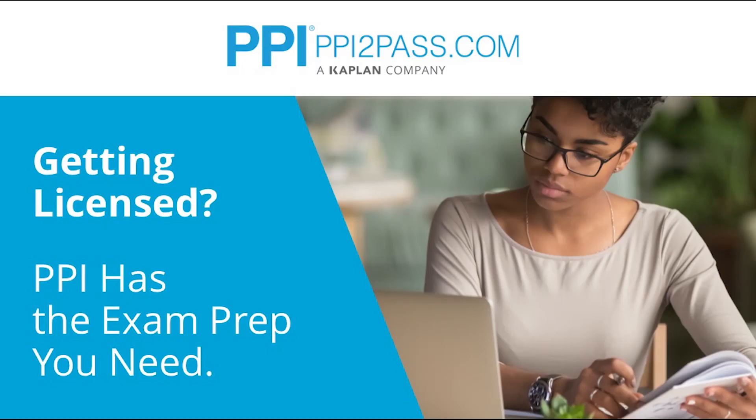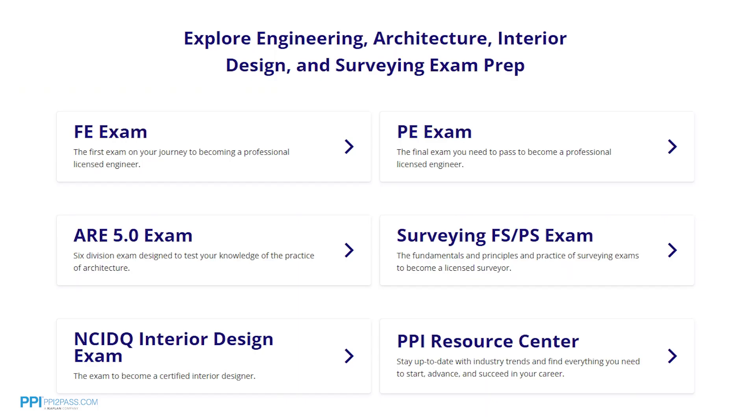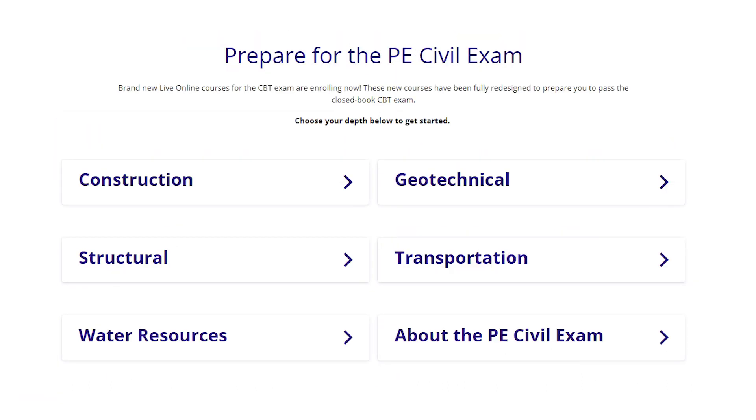PPI provides expert prep courses and study resources designed to help you pass the PE exam the first time. PPI's live online courses include hours of lectures, problem solving demonstrations, exam strategy sessions, office hours, and the passing guarantee. When you take a live online course, PPI guarantees you will pass or you can take the on-demand course for free.